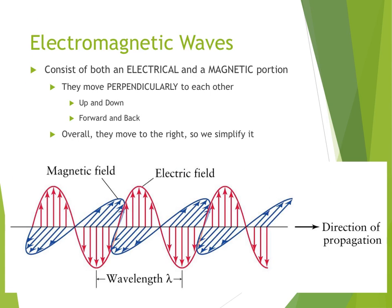Electromagnetic waves include both an electrical portion and a magnetic portion. These two portions move perpendicularly to each other. You can see right here that the electric field is moving up and down.